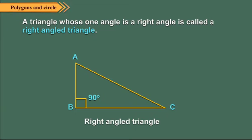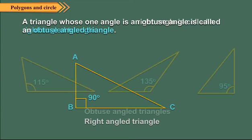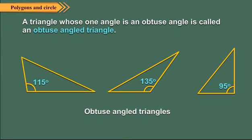A triangle whose one angle is a right angle is called a right angled triangle. In the figure, angle ABC is equal to 90 degrees, so triangle ABC is a right angled triangle. A triangle whose one angle is an obtuse angle is called an obtuse angled triangle. In the figure shown, one angle of each triangle is obtuse, so these are obtuse angled triangles.